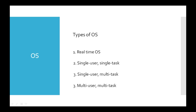Single-user, single-task operating systems allow one user to do one thing at a time. An example of a single-user, single-task operating system is the operating system used by personal digital assistants, also known as handheld computers. Single-user, multitasking operating systems allow a single user to simultaneously run multiple applications on their computer. This is the type of operating system found on most personal desktop and laptop computers.